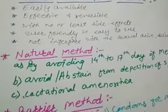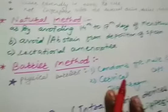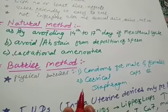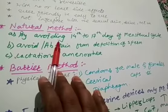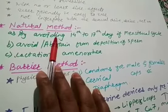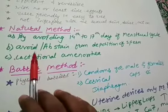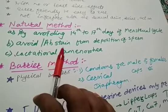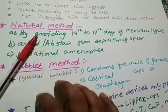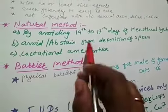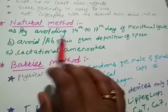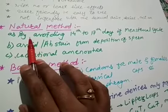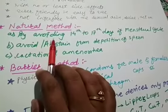Now we will see the different methods for the use of these contraceptives. The first is the natural method. The natural method has three subtypes, and its working principle is to avoid the chances of the ovum and sperm meeting. The first subtype is called periodic abstinence.